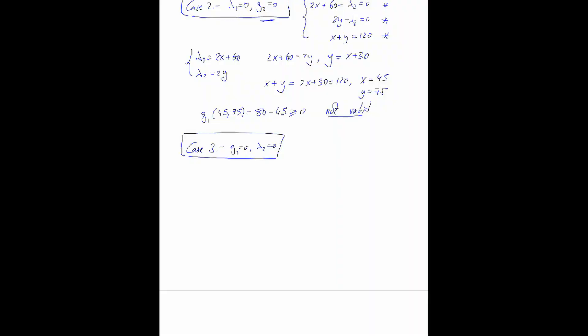For the third case, where g1 equals zero, we have x equals 80. Then from the partial derivatives: 2x plus 60 minus lambda 1 equals zero, and 2y equals zero, giving y equals zero. Now g2 of (80, 0) is 120 minus 80 minus 0 which equals 40. That is not equal to zero, so again this point is not valid.